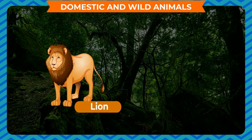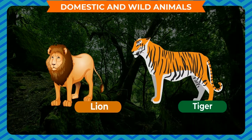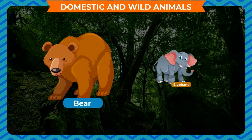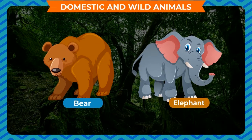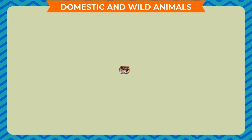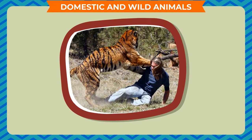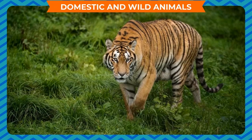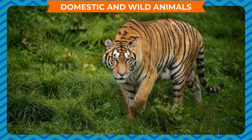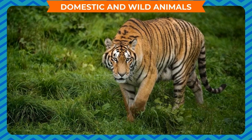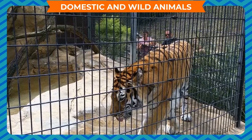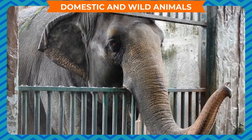Animals such as lion, tiger, bear, elephant, etc. that live in the forests are known as wild animals. We cannot keep them with us as they may be dangerous. They roam around freely in the forests. Some of them are also kept in the zoo.